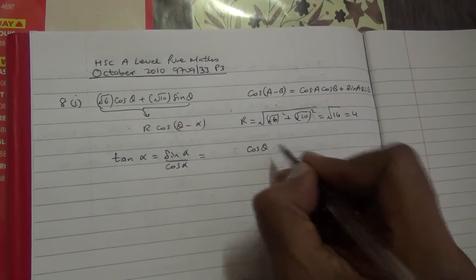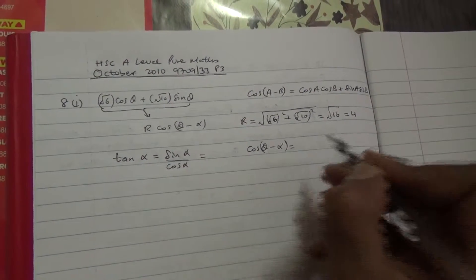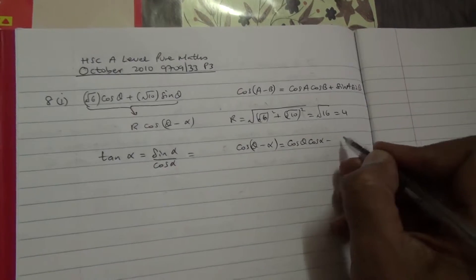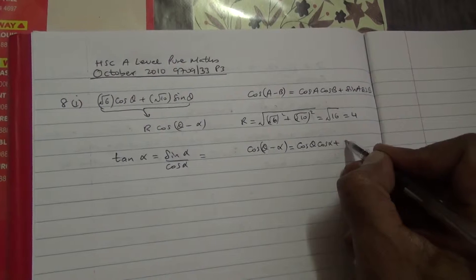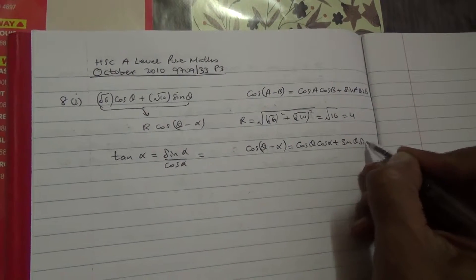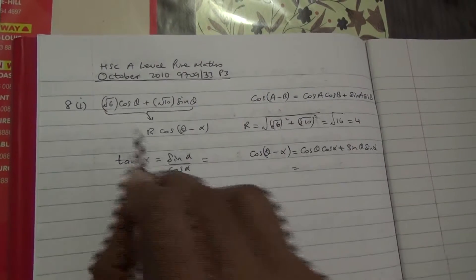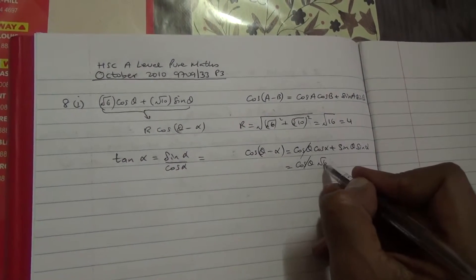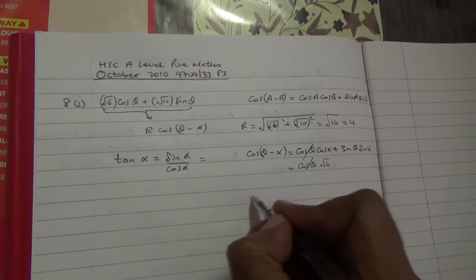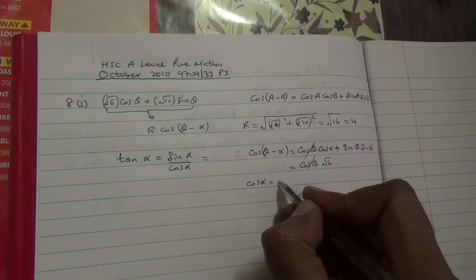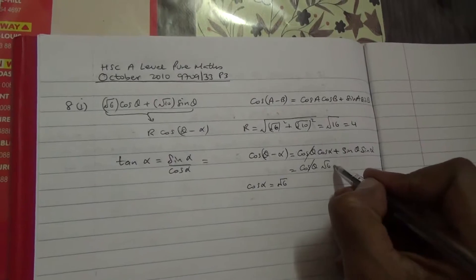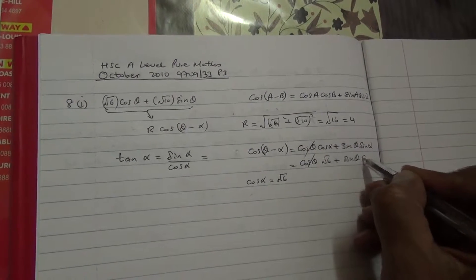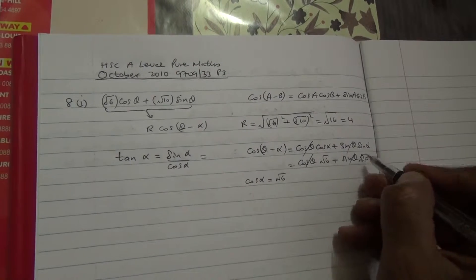We can say cos(theta minus alpha) equals cos theta cos alpha plus sine theta sine alpha. Then we compare: cos theta coefficient is root of 6, so r cos alpha equals root of 6. Similarly, sine theta coefficient gives r sine alpha equals root of 10, so sine alpha equals root of 10.